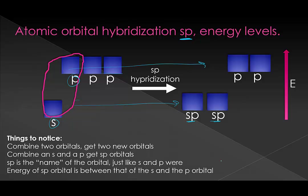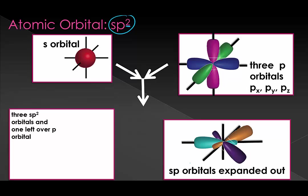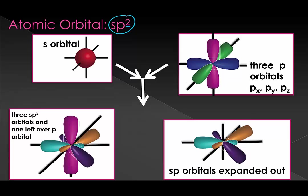Now we're going to do this for sp2 orbitals. sp2 means that two p orbitals are being combined. When we combine this, we started with three orbitals and we're going to end with three orbitals, called sp2. We started with one s and two p's — in this case the blue and the green — and we made three new orbitals that look somewhat between an s and a p.